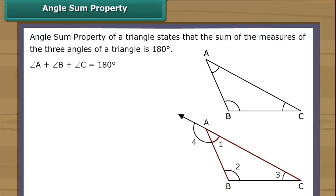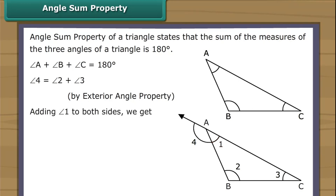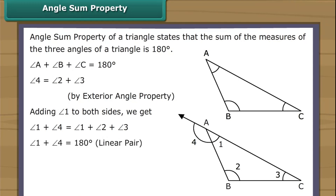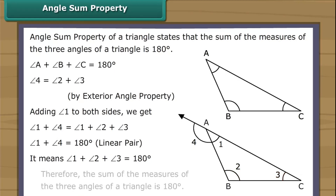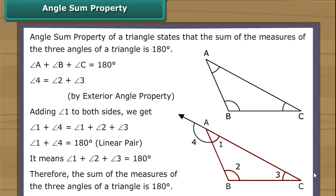We extend angle BAC. By the exterior angle property, angle 4 equals angle 2 plus angle 3. Adding angle 1 to both sides: angle 1 plus angle 4 equals angle 1 plus angle 2 plus angle 3. Since angle 1 plus angle 4 equals 180° (linear pair), it follows that angle 1 plus angle 2 plus angle 3 equals 180°. Therefore, the sum of the three angles of a triangle is 180°.